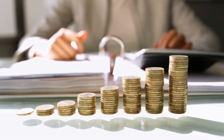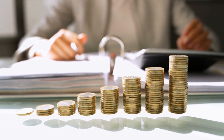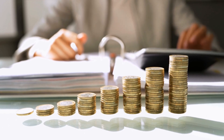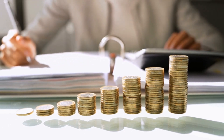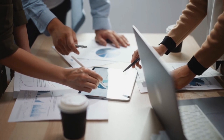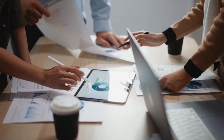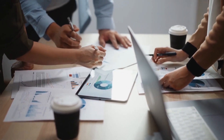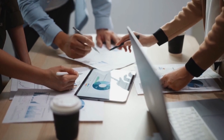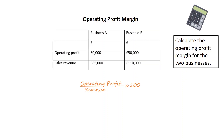Operating profit margin. This is profit after all expenses or indirect costs have been deducted, but before tax and interest are paid. It is a better measure of business performance and is used to measure a business's pricing strategy and operating efficiency. It gives an idea of how much a firm makes before interest and taxes on each pound of sales. To calculate operating profit margin, divide operating profit by revenue and multiply by 100. Pause the video if you'd like to give the task a try.